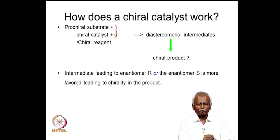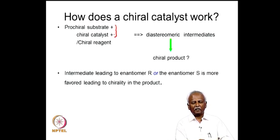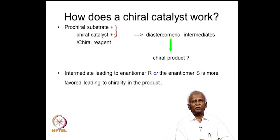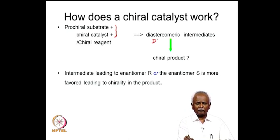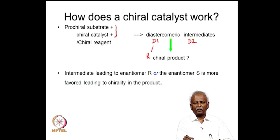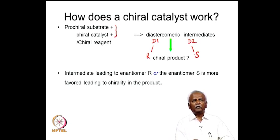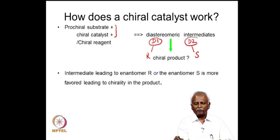A combination of a prochiral substrate and a chiral catalyst gives a diastereomeric intermediate. We will get two diastereomeric intermediates in unequal proportions, because unlike enantiomers, diastereomers do not have the same thermodynamic properties — they may be soluble to different extents or formed in different amounts. Let us label them D1 and D2. One diastereomeric form will give you the R isomer and the other the S isomer. Whichever is formed in greater amount will give you the desired enantiomer.